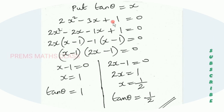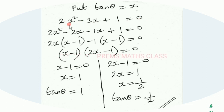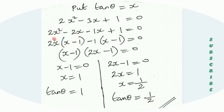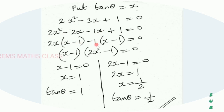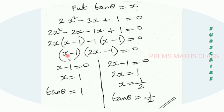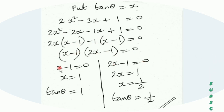So we got 2x squared minus 3x plus 1 equal to 0. Now factorizing this quadratic equation: 2x squared minus 2x minus x plus 1 equal to 0. Taking 2x common gives 2x times (x minus 1), and taking minus 1 common gives minus 1 times (x minus 1), equal to 0. So (x minus 1)(2x minus 1) equal to 0.